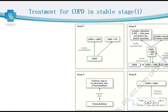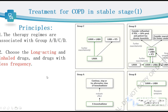Regarding treatment for COPD in the stable stage, we need to refer back to the group A, B, C, D assessment. There are two principles for the therapy regimen: one, the regimen is associated with groups A, B, C, and D; and two, we need to choose long-acting inhaled drugs for these patients, and drugs with lower dosing frequency are preferable.